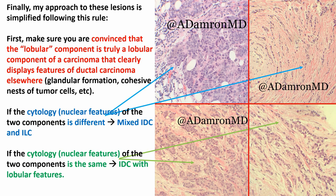I have a very simple approach taught to me by one of my mentors: does the lobular component look completely different from the ductal component? You first convince yourself that the lobular component truly displays features of lobular carcinoma, while elsewhere there's clear ductal carcinoma. Then you need to determine: are they lobular features, or am I going to call it truly mixed? What was taught to me is: is the cytology different? Are the nuclear features different between the two components? If you look at this case: the ductal component has grade two, very large, cohesive nuclei; the lobular component has nuclei that actually look different — low grade. So the cytology is different between the two components; in those scenarios, I'm going to call it a mixed carcinoma — a mixed IDC and ILC.